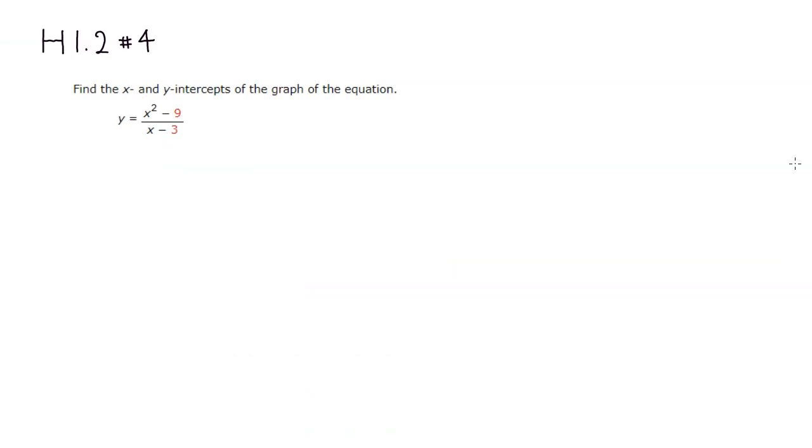In order to find x-intercepts, all you need to do is set y equal to 0. So we have this equation, put 0 for y, so you have 0 equals x squared minus 9 over x plus 3.